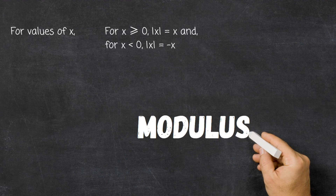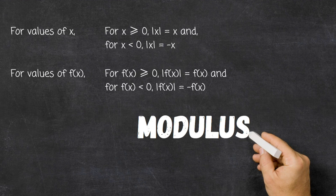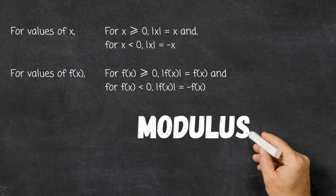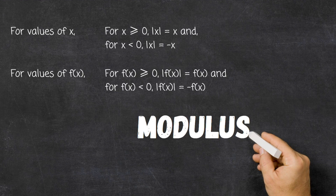So negative values of x become positive. We can apply this modulus function not only to variables but to functions of variables as well, and we'll look at what these look like as graphs. For values of f of x greater than or equal to zero, the modulus of f of x is simply equal to f of x. For negative values of f of x, the modulus of f of x becomes minus f of x — the sign will change — so a negative value of f of x will become positive.